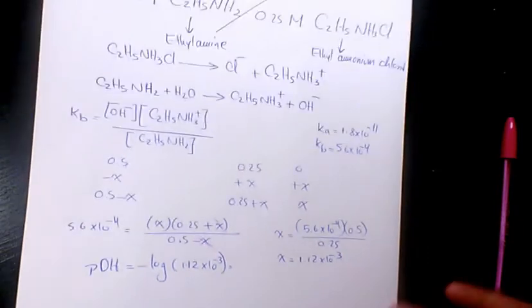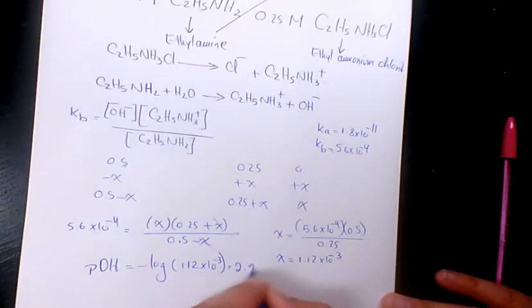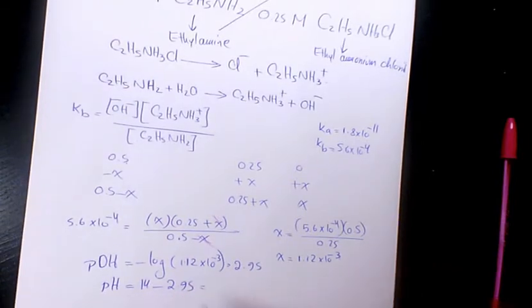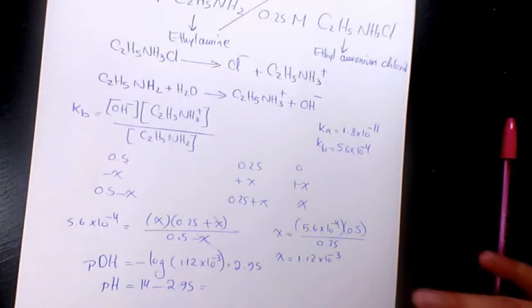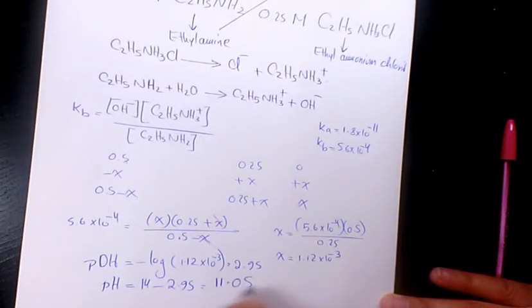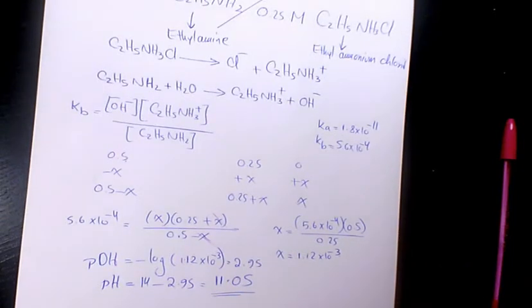It's gonna give me 2.95, and pH will be 14 minus 2.95, that will be 11.05. That's the pH of this solution.